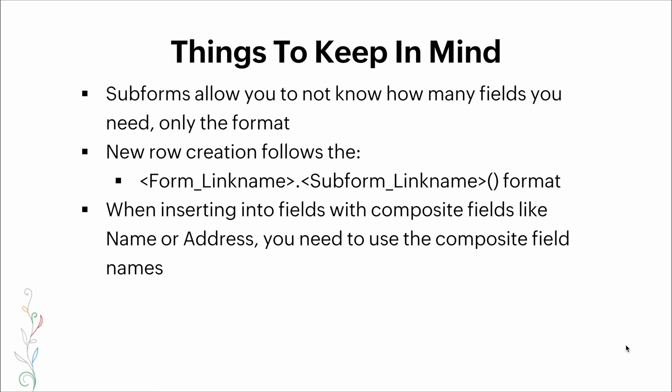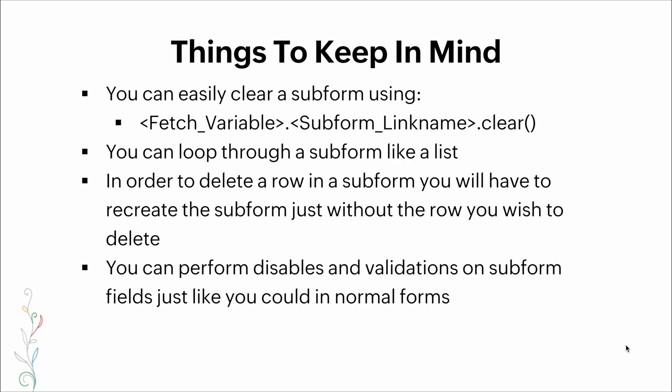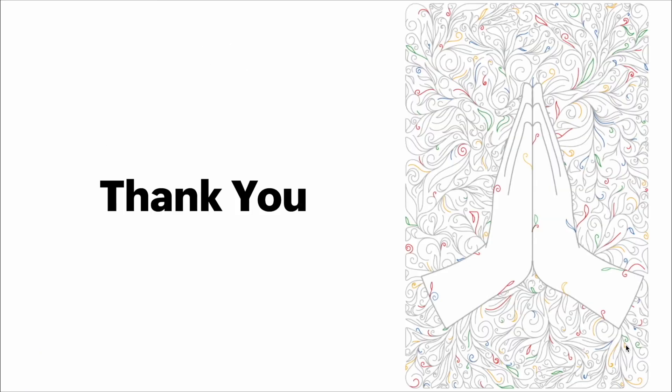Here are a few things to keep in mind: subforms allow you to not know how many fields you need, only the format. New row creation follows the form_link_name.subform_link_name format. When inserting into composite fields like name or address, you need to use composite field names. You can easily clear a subform using fetch_variable.subform_link_name.clear(). You can loop through a subform like a list. To delete a row, you will have to recreate the subform without the row you wish to delete. You can perform disables and validations on subform fields just like in normal forms. Thank you very much for your time — I hope you found this video educational.